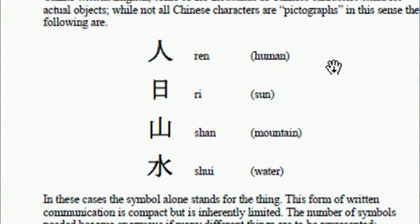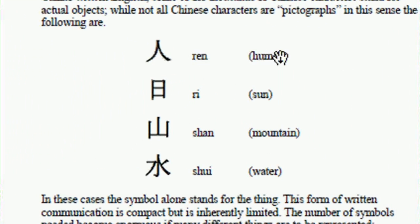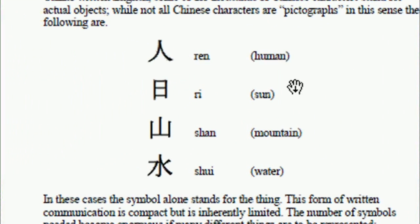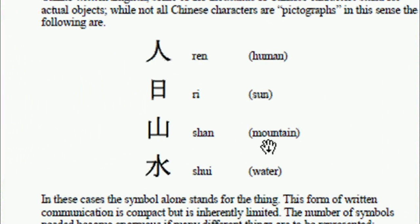In this case, these symbols in Chinese represent things: human, sun, mountain, and water.